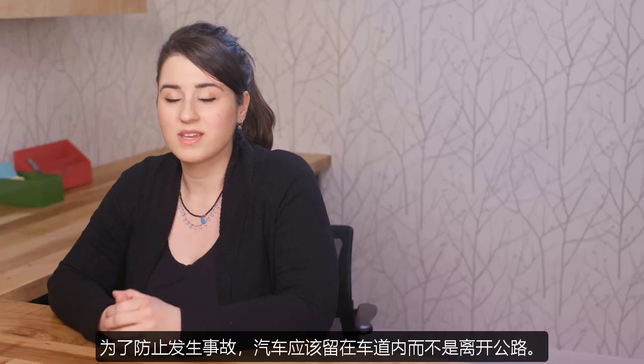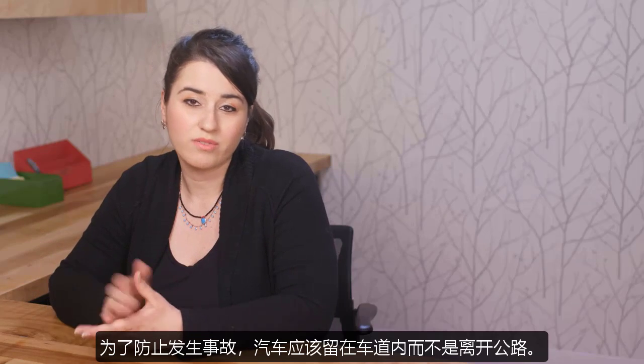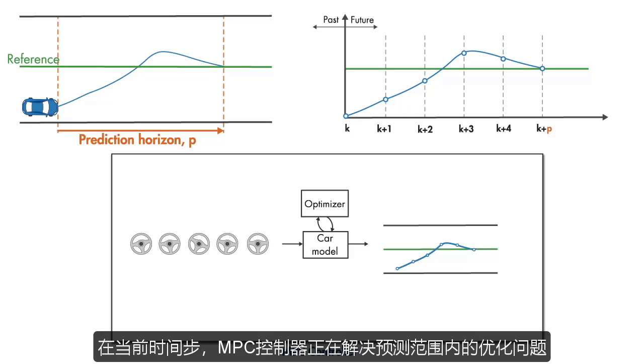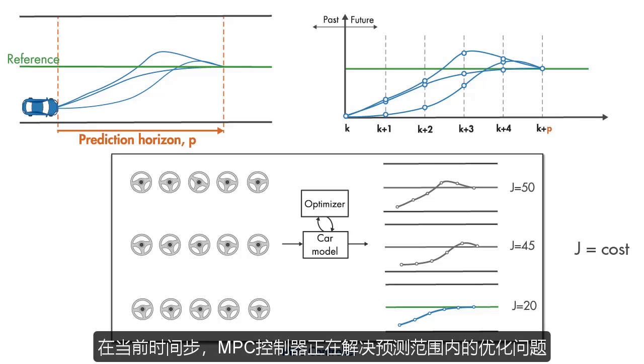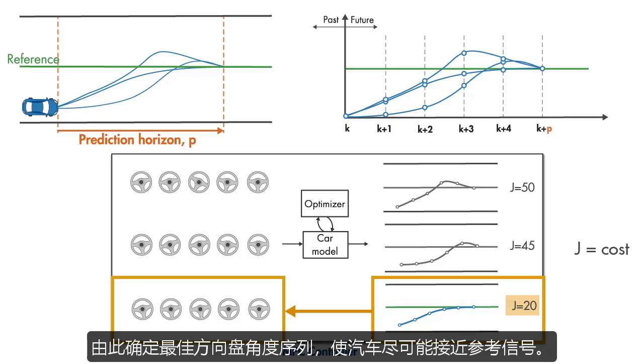In order to prevent accidents, the car is supposed to stay within the lane without going off the road. At the current time step, the MPC controller is solving the optimization problem over the prediction horizon while satisfying the constraints. The predicted path with the smallest J gives the optimal solution and therefore determines the optimal steering wheel angle sequence that will get the car as close as possible to the reference.